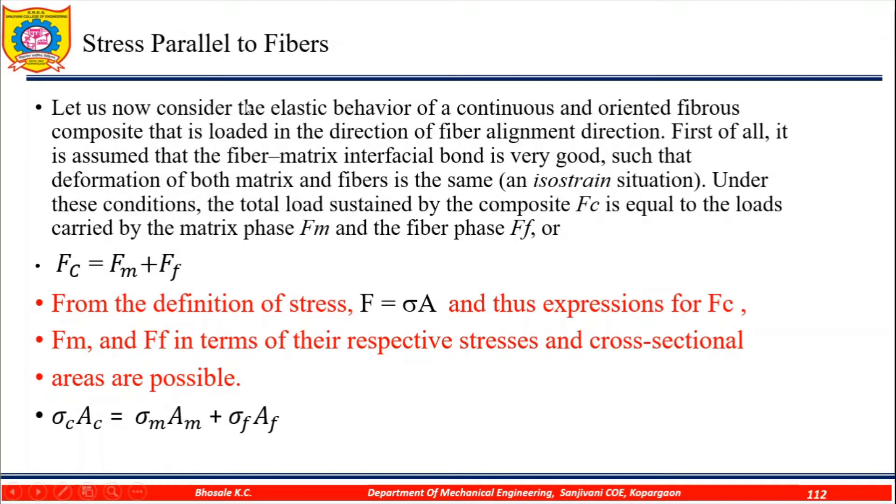First case: stress is parallel to the fibers. Let us now consider the elastic behavior of the continuous and oriented fibers composite that is loaded in the direction of the fiber alignment direction. First of all, it is assumed that the fiber matrix interfacial bond is very good such that deformation of both matrix and fibers is the same in isostrain situation. Under these conditions, the total load sustained by the composite Fc is equal to the loads carried by the matrix phase Fm and the fiber phase Ff.